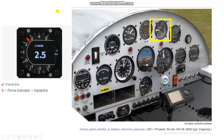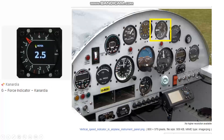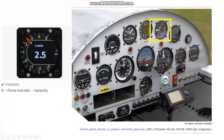On old aircraft — I remember when I worked on the Boeing 707 — there was a gauge with a red pointer. The red pointer would go to the maximum value and then stay there, to show the maintenance engineer that a heavy landing had occurred.